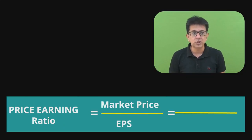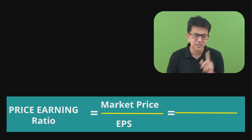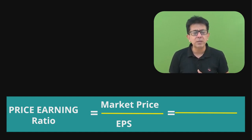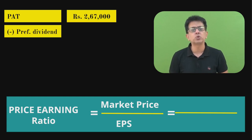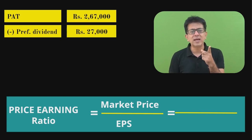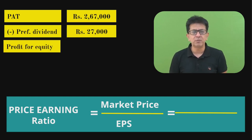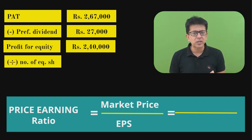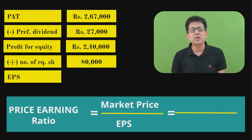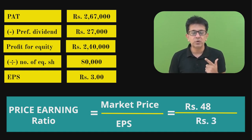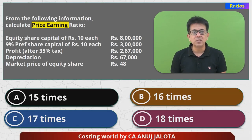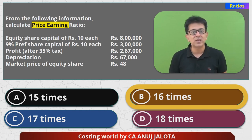This is how we think about when to buy a share and when not to. So let's come to this question: Market Price ÷ EPS. Market price was ₹48. To compute EPS, we start with PAT of ₹2,67,000. Subtract preference dividend of 3,00,000 × 9% = ₹27,000. Profit available for equity = ₹2,40,000. Divide by number of equity shares: 80,000. So EPS = ₹3. P/E ratio = 48 ÷ 3 = 16 times. Out of the four options, B — 16 times — is the correct answer.